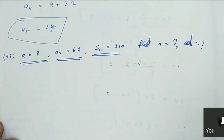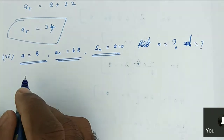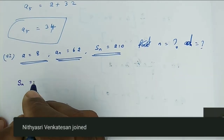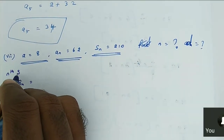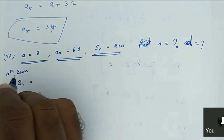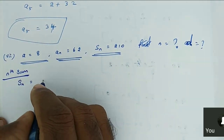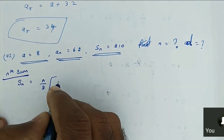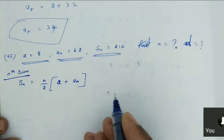Then A plus A_N. Very good. A is also given; A_N is also given. S_N is equal to — that is the Nth sum — S_N is equal to N by 2, times A plus A_N.